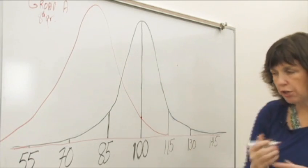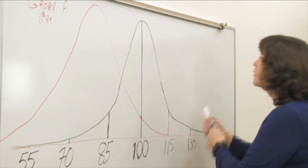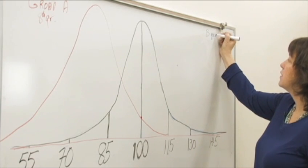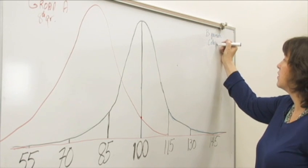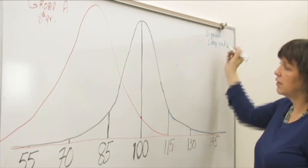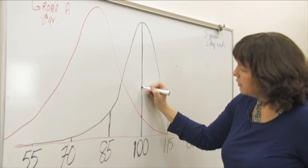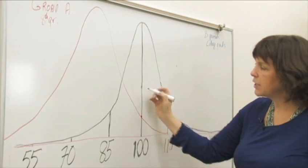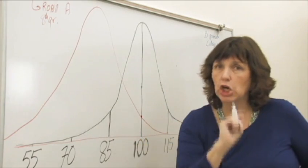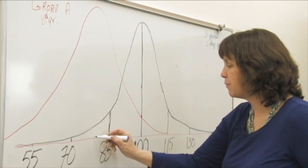The bell curve for Group B, and those are the kids with parents are college grads. That child who got a 100 IQ would actually be about here, and the bell curve for children in Group B would look something like this.